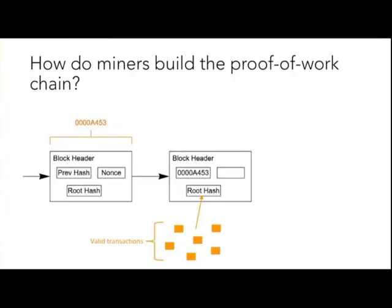The way that all three things work together — the previous hash, the nonce, and the root hash — is that when you hash all of this together, you get something that has a number of leading zeros. If you look at the left side here in the yellow, the number of leading zeros is four. That's the proof-of-work. And to explain the proof-of-work, let's look at a block that is being made over on the right side.